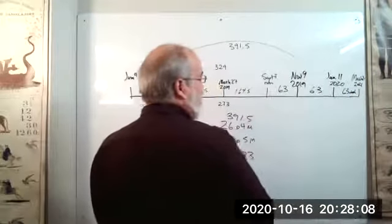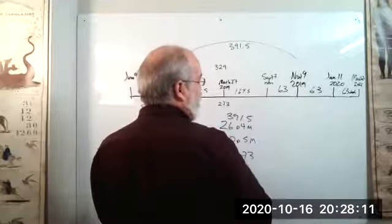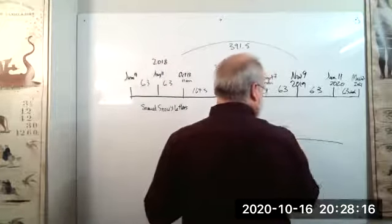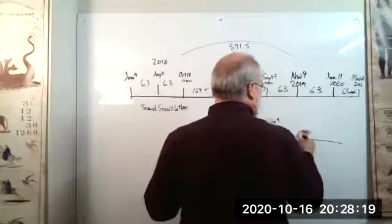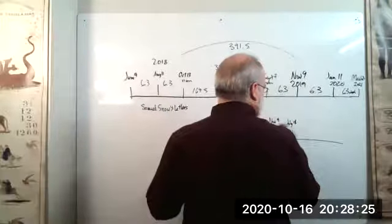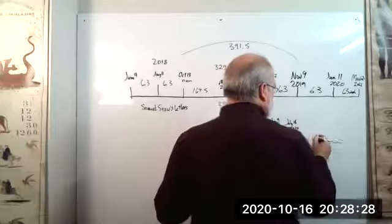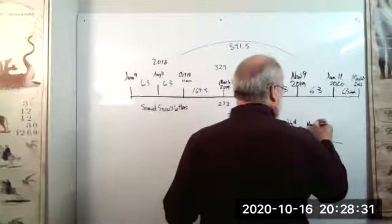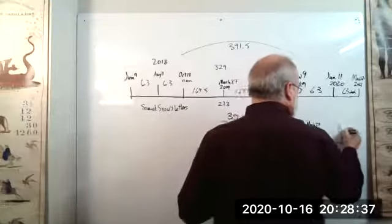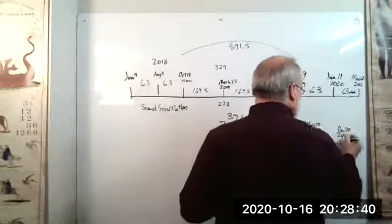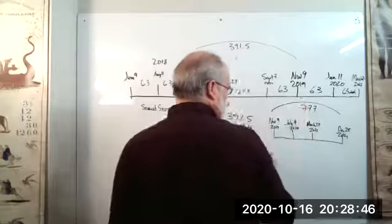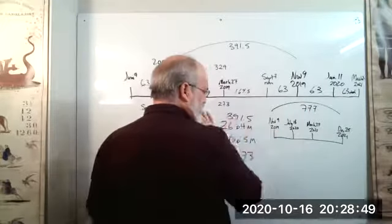Now, March 27th, 2021 was already a date that we had, right? We had that in the 777 structure where you have November 9th. You have July 18th, so 2019, 2020. And then you have March 27th, 2021. And then you have December 25th, 2021, a period of 777 days, which was Stephen's find, which he had actually used initially in understanding November 9th.